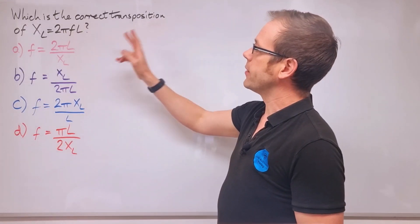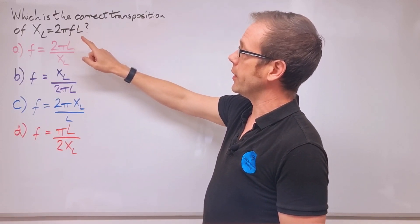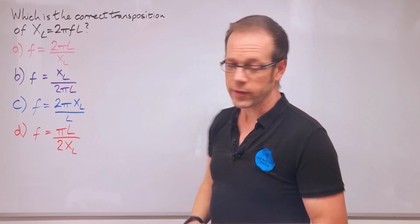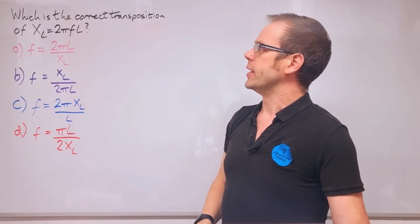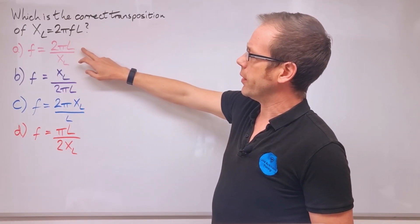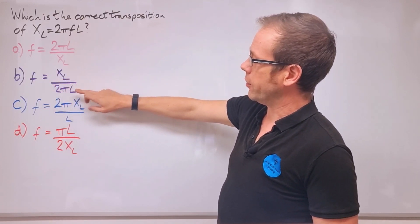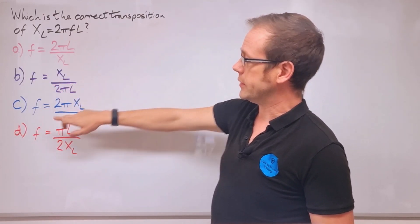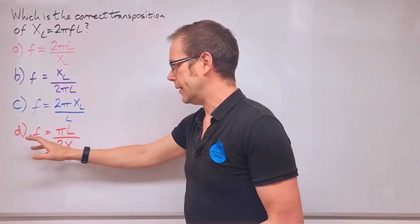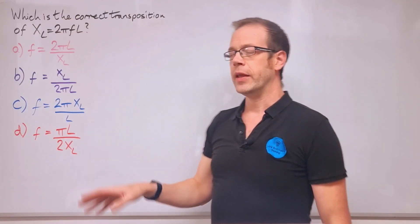Which is the correct transposition of XL equals 2πfl? We've got four options: A is f equals 2πl over XL; B is f equals XL over 2πl; C is f equals 2π times XL over l; and D is f equals πl over 2XL.